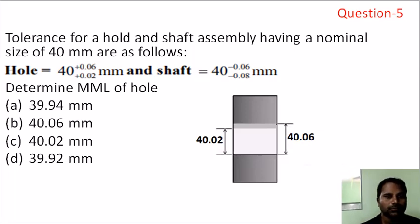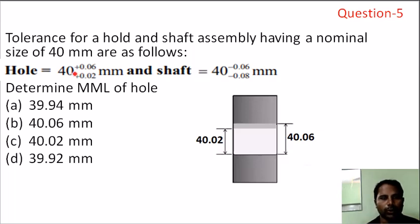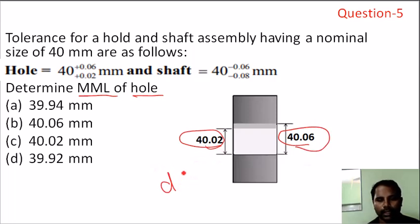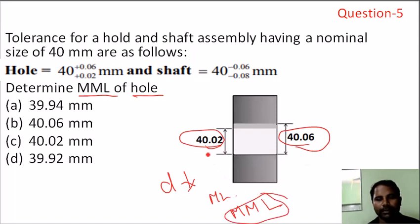Question number 5: we can use the nominal size and the whole tolerance — 40 plus 0.02 and 0.03 for the shaft. The maximum material limit of the hole: the lower limit is 40.02 and the upper limit is 40.06. The maximum metal limit, that is the minimum material condition, gives a diameter limit of 40.02. Option C is the correct answer.